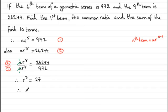So r cubed equals 27, and to get r, the common ratio, we just need to take the cube root of 27, and that's going to be 3. So our common ratio is 3.